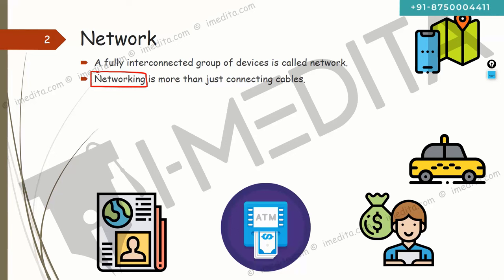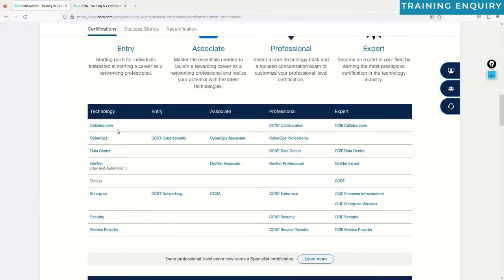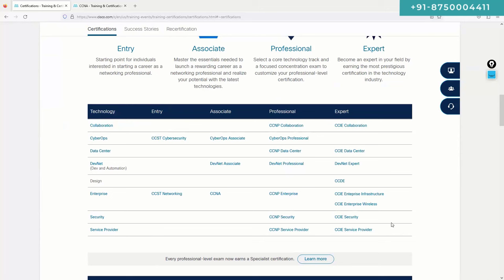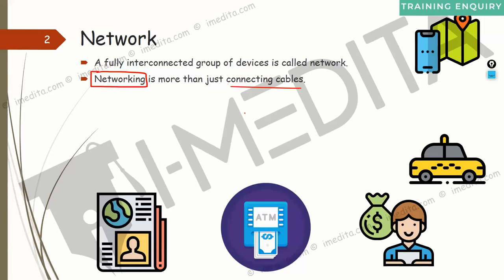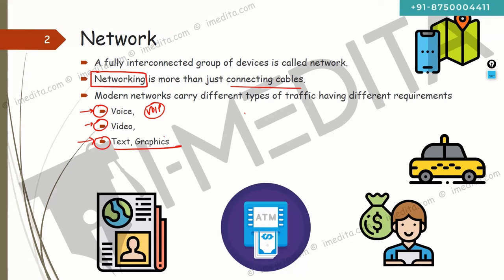People as end users think networking is just connecting cables and making it work — but it's a lot more complicated than that. You can guess from the number of streams and specializations that exist. You could spend your whole life going through just Cisco's networking content. Modern networks carry different kinds of traffic: voice over IP calls, video calls, text, and graphics — each with different requirements.